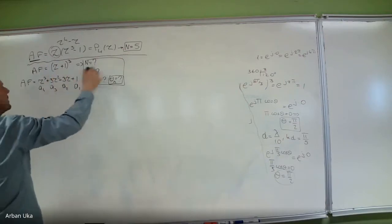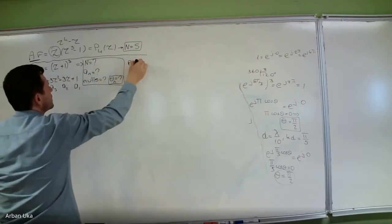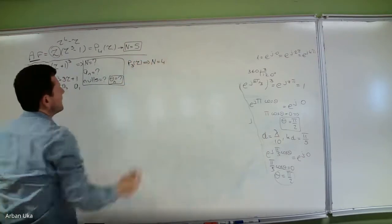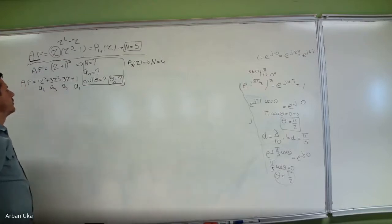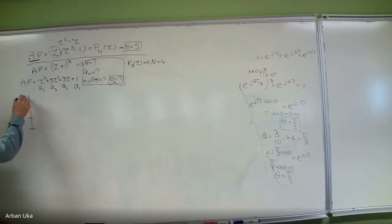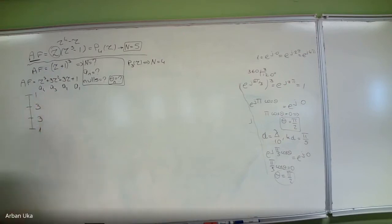Now this polynomial is third order in z, so we can easily imply that n is equal to 4. If n is equal to 4, the excitation coefficients are: a1 = 1, a2 = 3, a3 = 3, and a4 = 1.